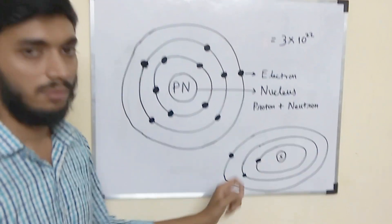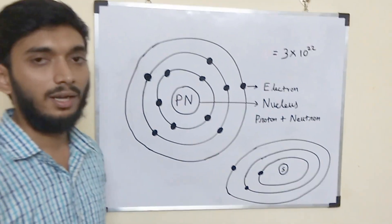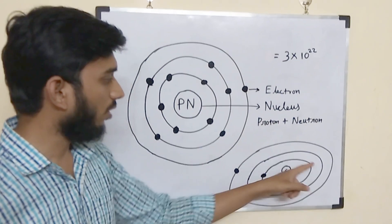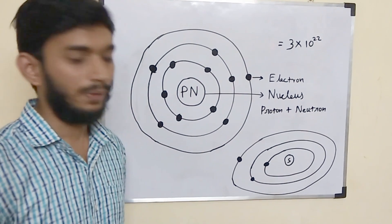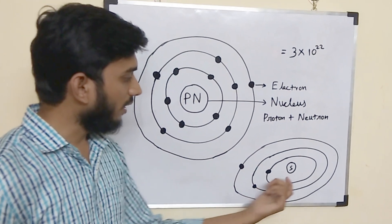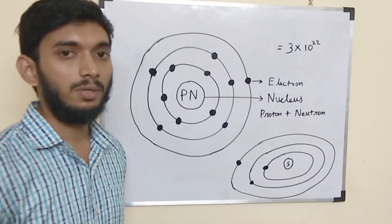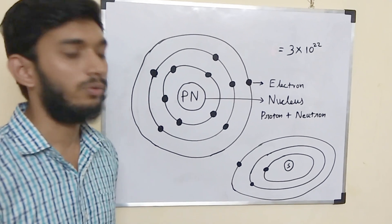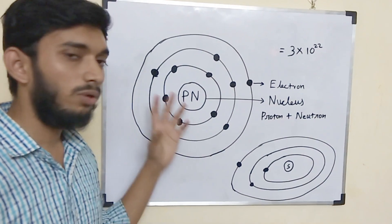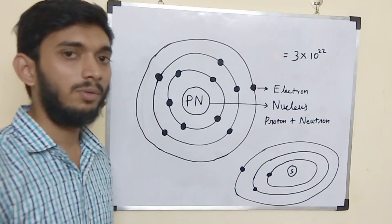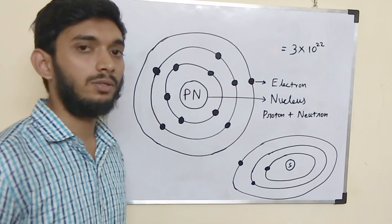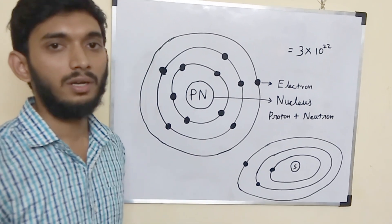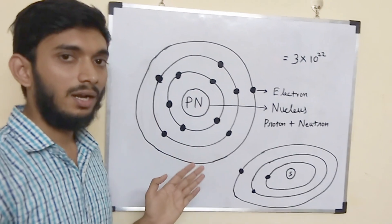If we take a solar system as an analogy, there is a sun in the center. For example, if we look at Pluto, it orbits at a distance from the sun. Similarly, electrons orbit at a distance from the nucleus.